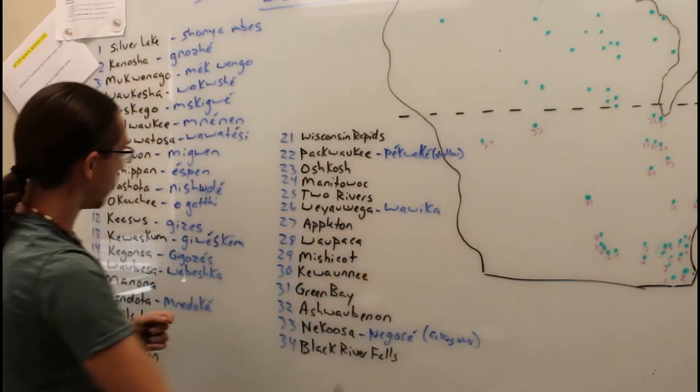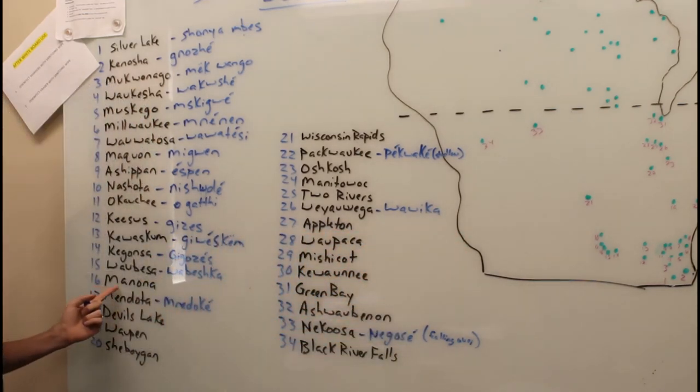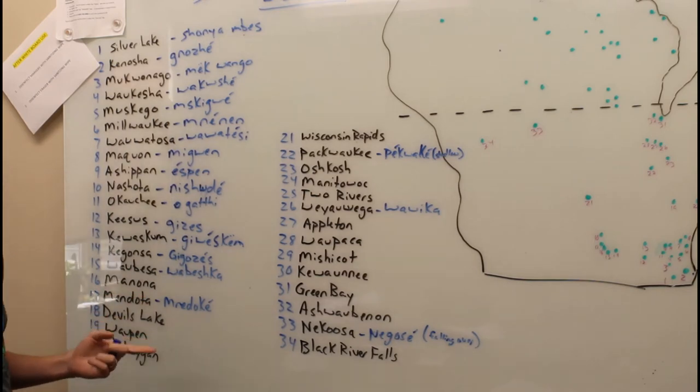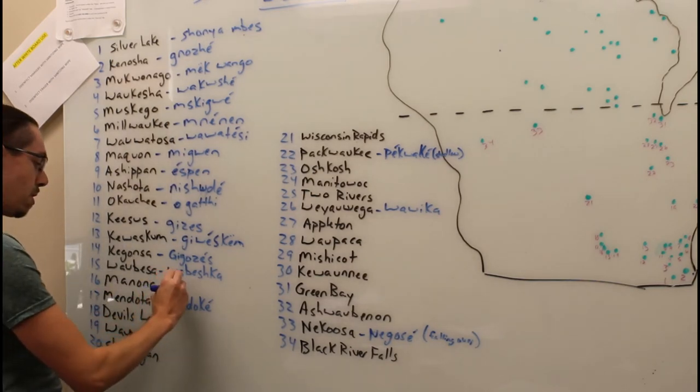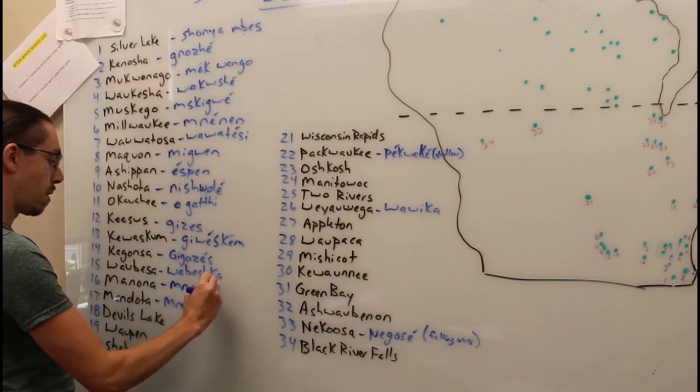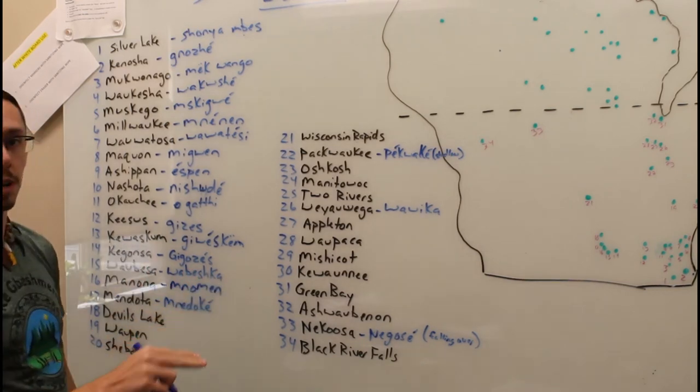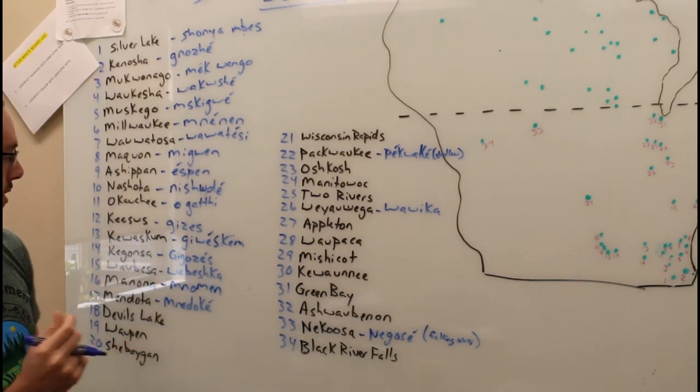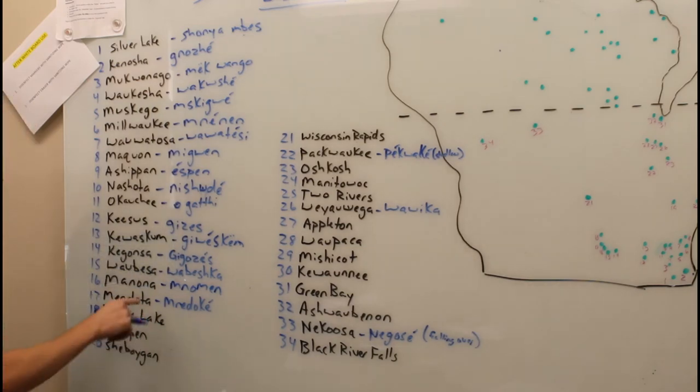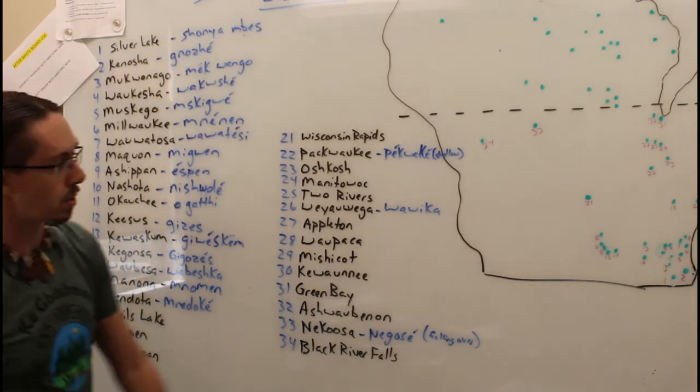Just northwest of there, you have Monona, Wisconsin, which actually comes from Monomen. Monomen is wild rice, the good grain.